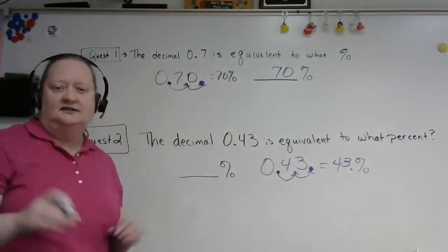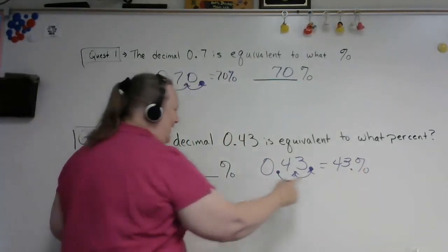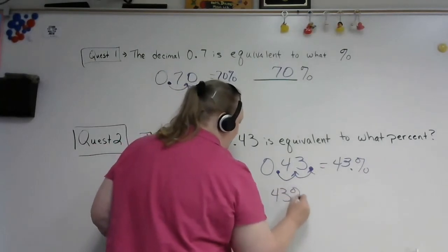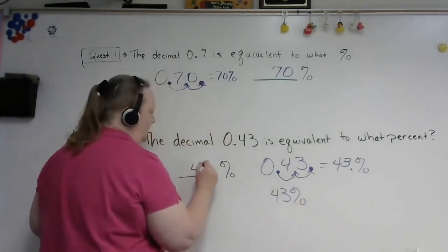I know that looks like a strange three. Just ignore the sloppy handwriting. So that's 43%, and we would type in 43.